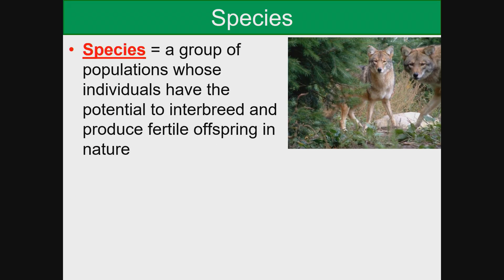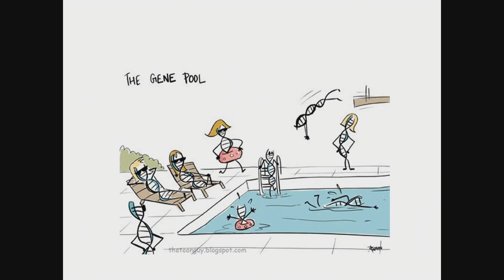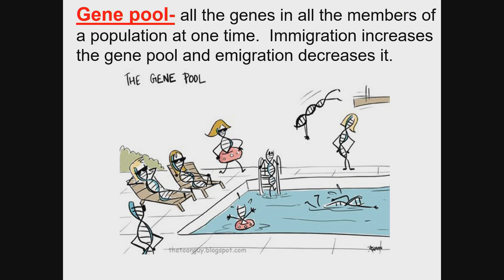A species is a group of populations whose individuals have the potential to interbreed and produce fertile offspring in nature. Members of a population are more likely to breed within the same population, so genes tend to stay in the same population for generations. A gene pool is all the genes in all the members of a population at one time. Immigration, or individuals coming into the population, increases the gene pool, and emigration, or individuals leaving the population, decreases it.